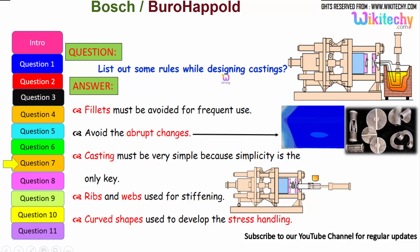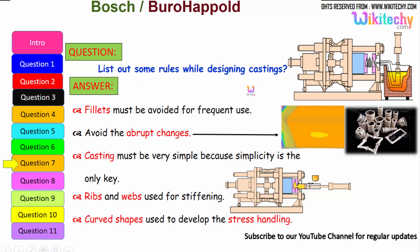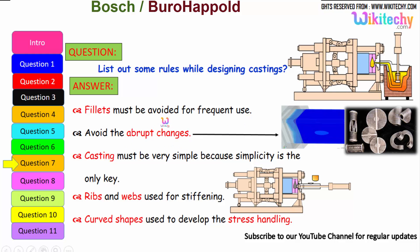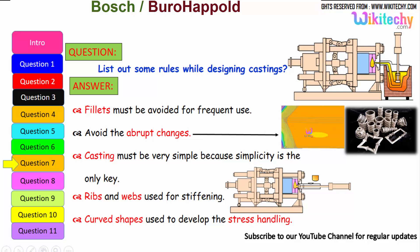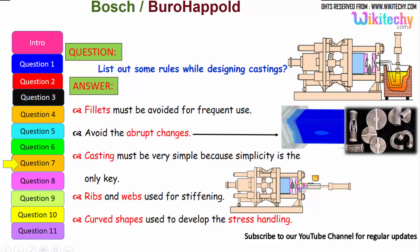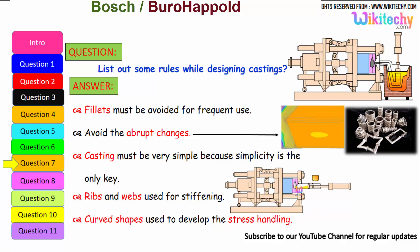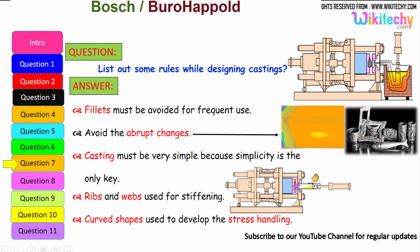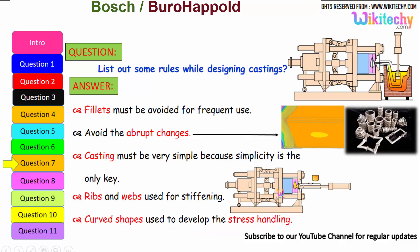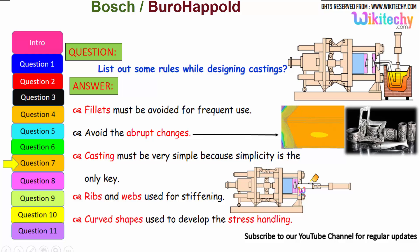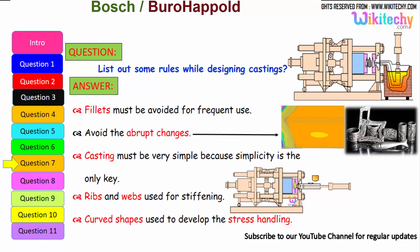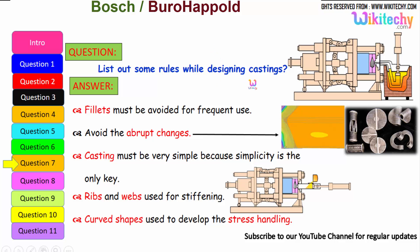Let us see some of the rules while designing castings. Fillets must be avoided for frequent use. Avoid abrupt changes. Castings must be very simple — simplicity is the key. Ribs are used for stiffening, so you should have ribs throughout. The curved shape should be used to handle stress distribution. These are all some of the rules to follow for castings.